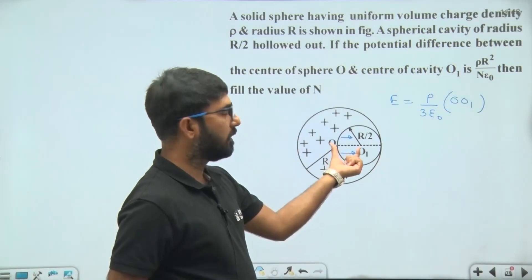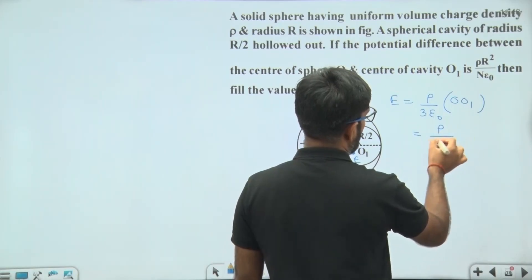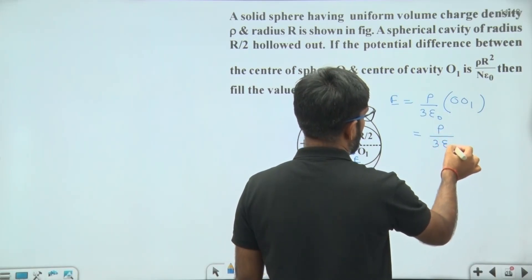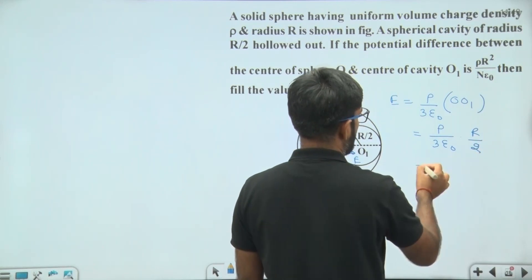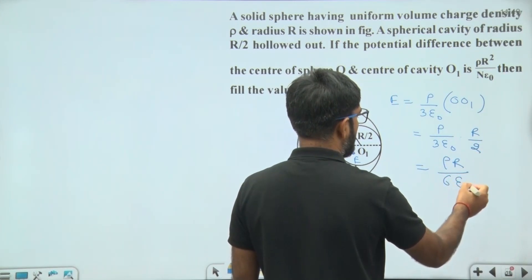Distance between O and O1 is R by 2. Then this electric field will be equal to rho upon 3 epsilon 0 into R by 2. This will be given by rho into R upon 6 epsilon 0.